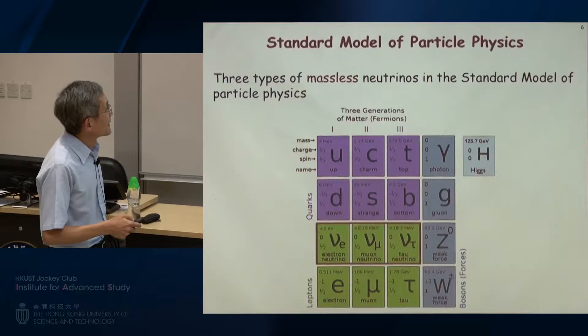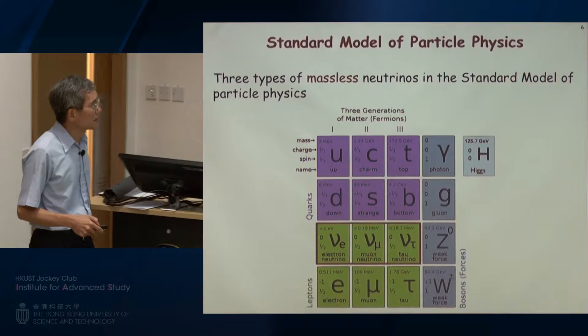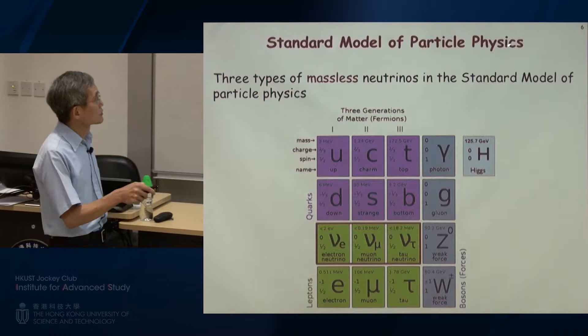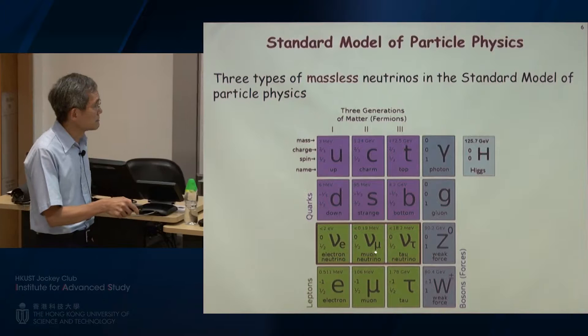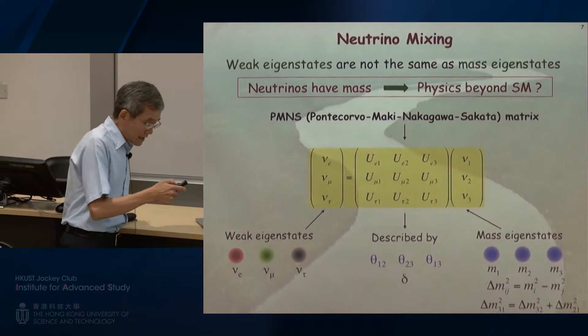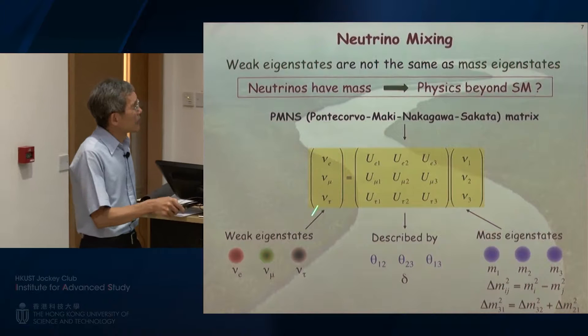If we now fast-forward: besides the electron neutrino discovered by the previous experiment, nowadays we know there are two other kinds. Altogether, we have three kinds of neutrinos in the so-called Standard Model of particle physics: the electron type, the muon type, and the tau type. One interesting thing about these three kinds of neutrinos is that according to theoretical speculation, they are not independent of each other. Instead, the three neutrinos that we observe in the laboratory are related to three so-called neutrinos with definite masses.